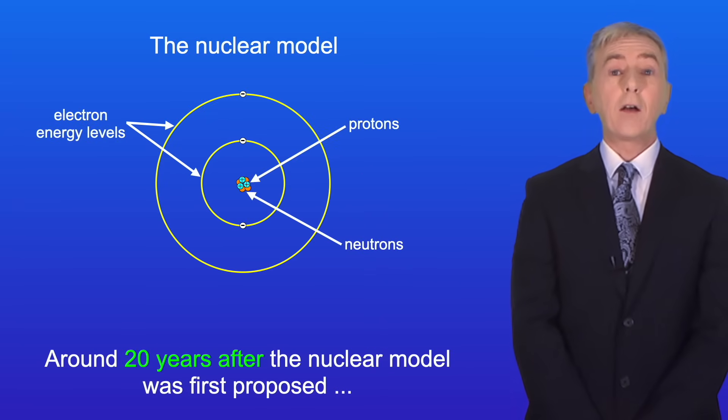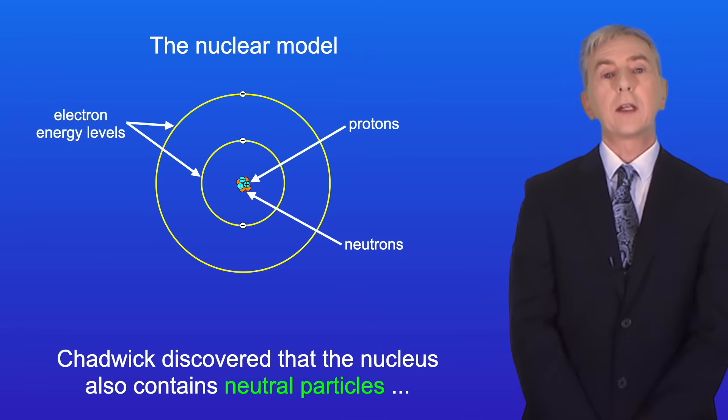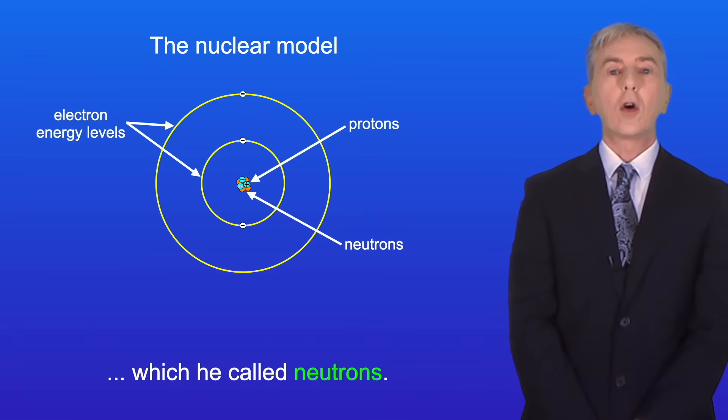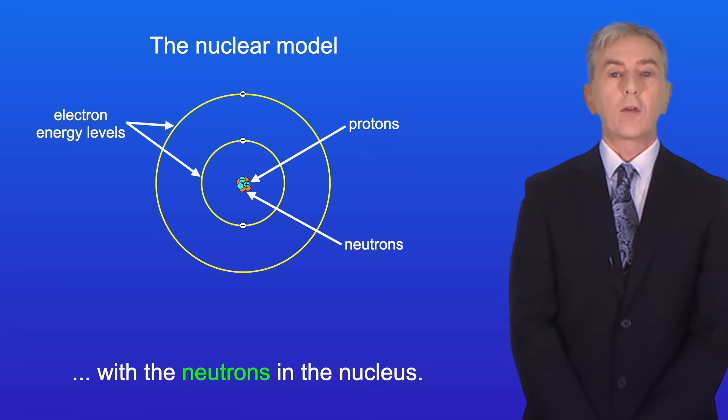Around 20 years after the nuclear model was first proposed the scientist James Chadwick made a final important discovery. Chadwick discovered that the nucleus also contains neutral particles which he called neutrons. So here's the final version of the nuclear model with the neutrons in the nucleus.